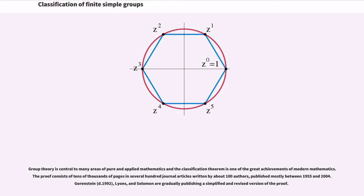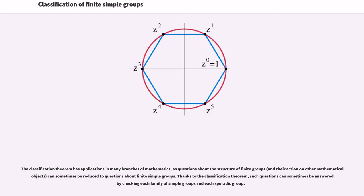Gorenstein, Lyons, and Solomon are gradually publishing a simplified and revised version of the proof. The classification theorem has applications in many branches of mathematics, as questions about the structure of finite groups and their action on other mathematical objects can sometimes be reduced to questions about finite simple groups. Thanks to the classification theorem, such questions can sometimes be answered by checking each family of simple groups and each sporadic group.